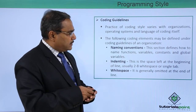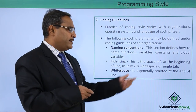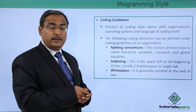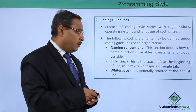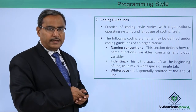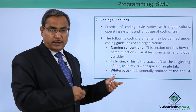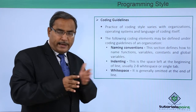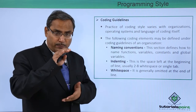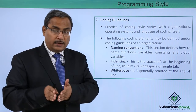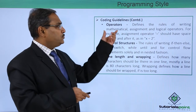The next element is indenting — the space left at the beginning of a line, usually two to eight characters or a single tab. White space is generally omitted at the end of a line. Indentation should be done to leave some space at the beginning of each line to denote that a series of lines belong to one block, and another series belongs to an inner block.